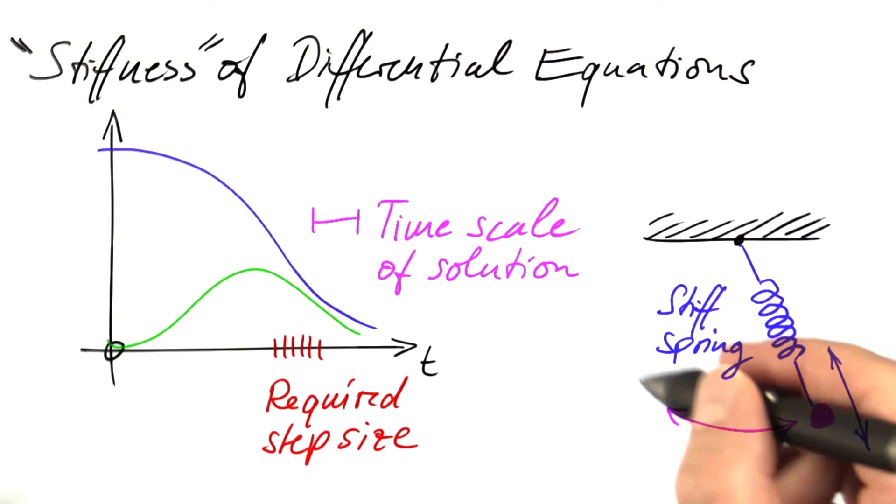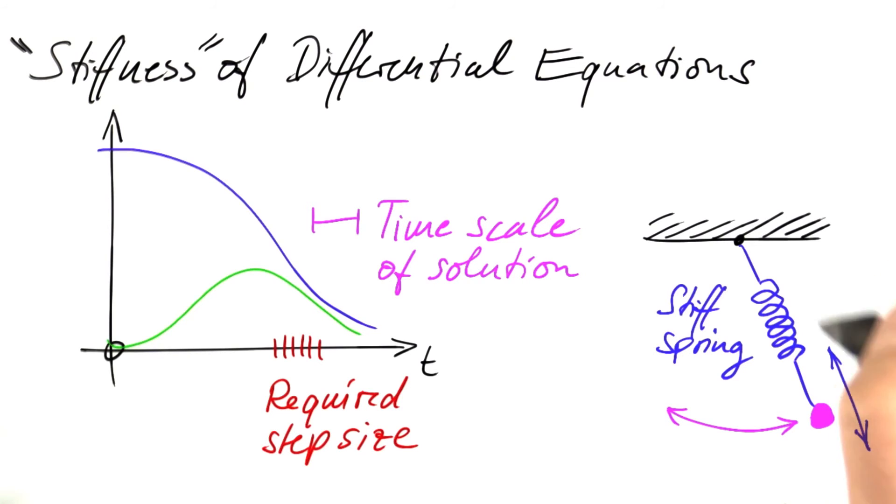The observer, however, mostly sees the swinging motion and can't see that oscillation up and down. This oscillation, however, will force us to use a very tiny time step in a forward Euler solver.